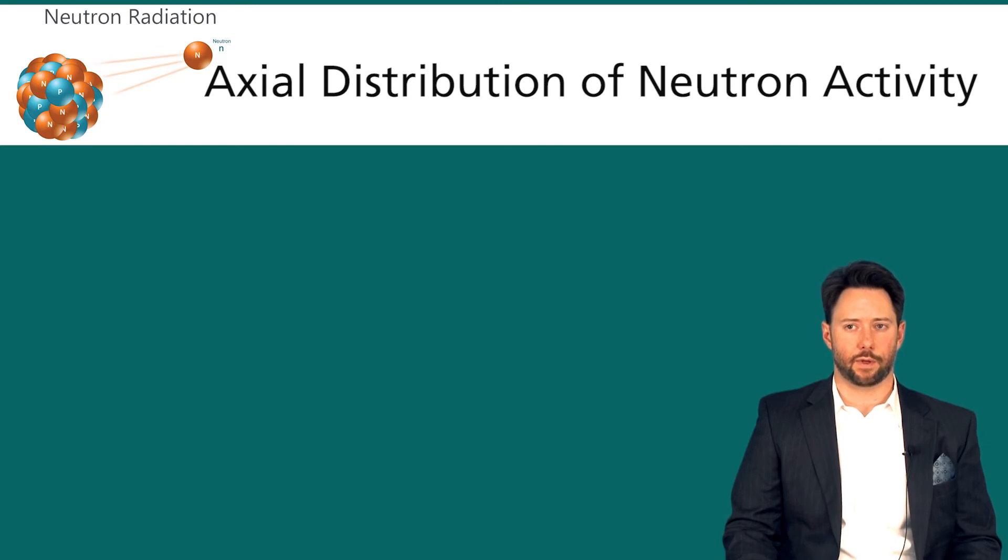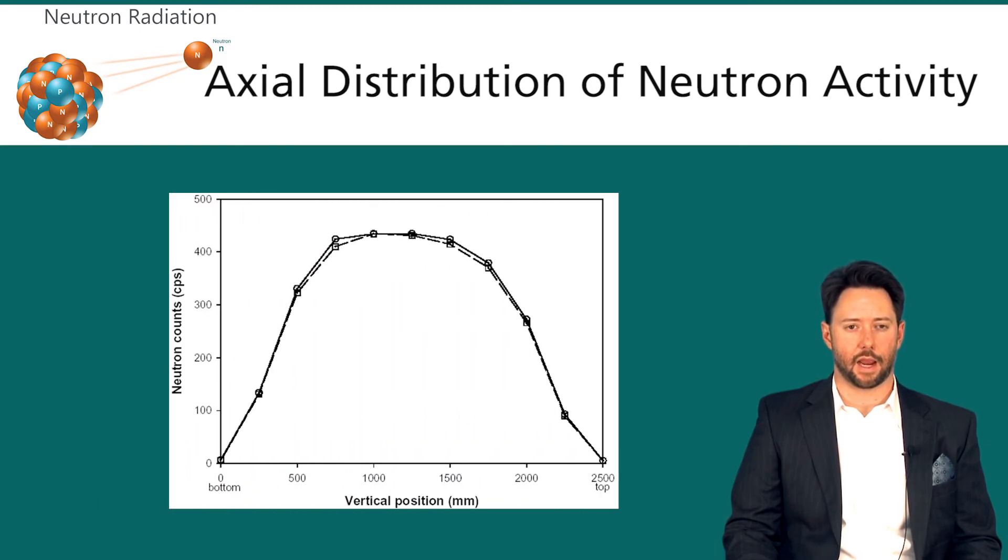If we take a look at the axial distribution of neutron activity, again you see the same thing that we saw with the gamma ray activity. In this figure we have neutron counts on the vertical axis and vertical position from bottom to top on the horizontal axis. You see this curve with the peak intensity in the middle, which indicates that the most fissions occurred in the middle of the fuel, which as we know from before is the way it works.